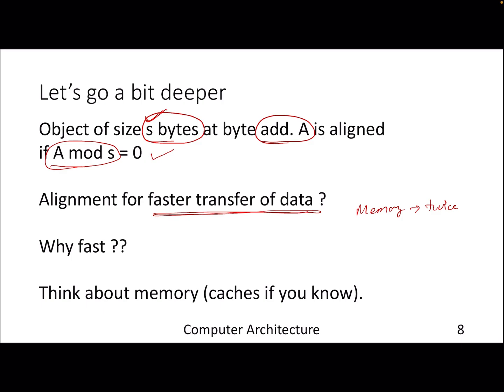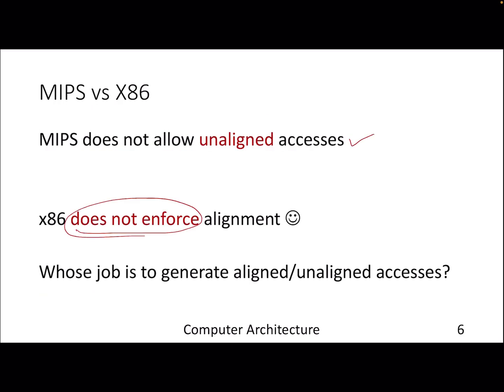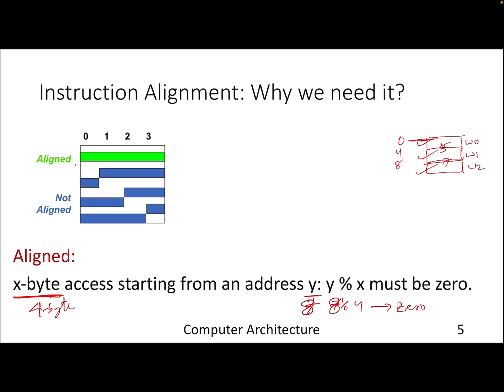It will be much more clear once we jump into memory hierarchy, caches and all. But at this moment, you can just think about the number of accesses that you will make if it is not aligned. As you can see here, this is an aligned access but these are not. For each you need to make two accesses. But here it's just one access.